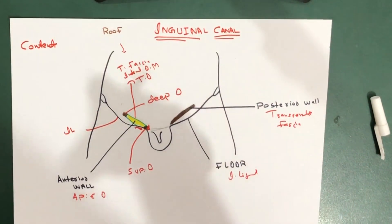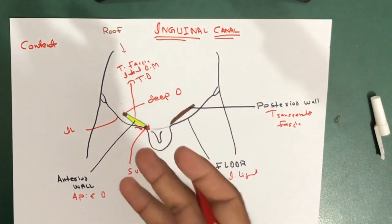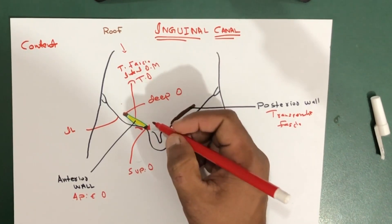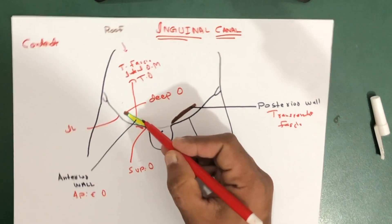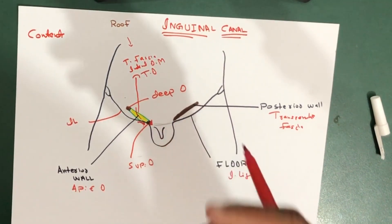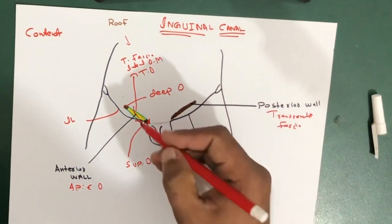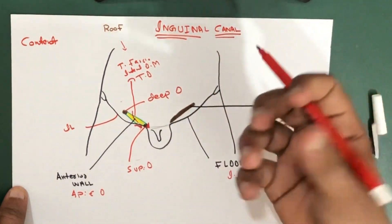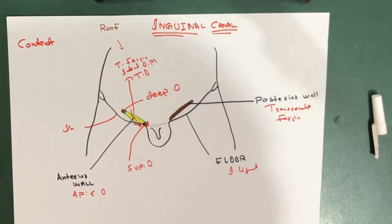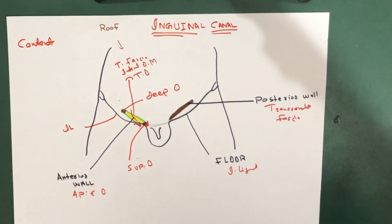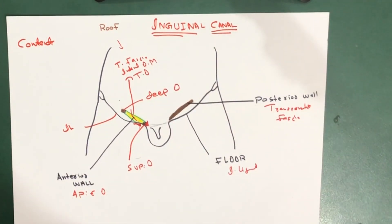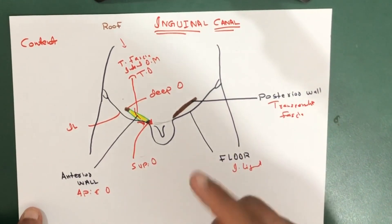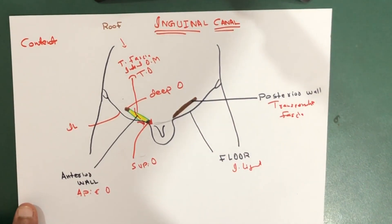The ilioinguinal nerve has only sensory innervation of the genitalia. It travels through only part of the inguinal canal, exiting at the superficial inguinal ring. This nerve is most at risk during inguinal hernia repair — if asked which nerve is most commonly injured during herniation of the inguinal canal, the answer is the ilioinguinal nerve. The fourth content is the genital branch of the genitofemoral nerve.